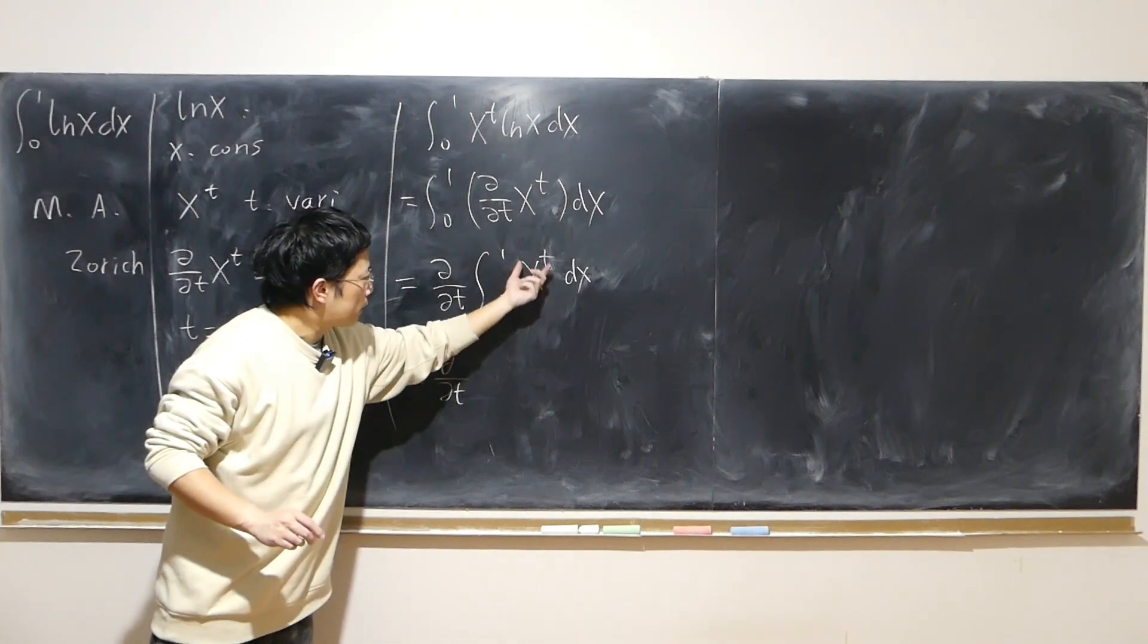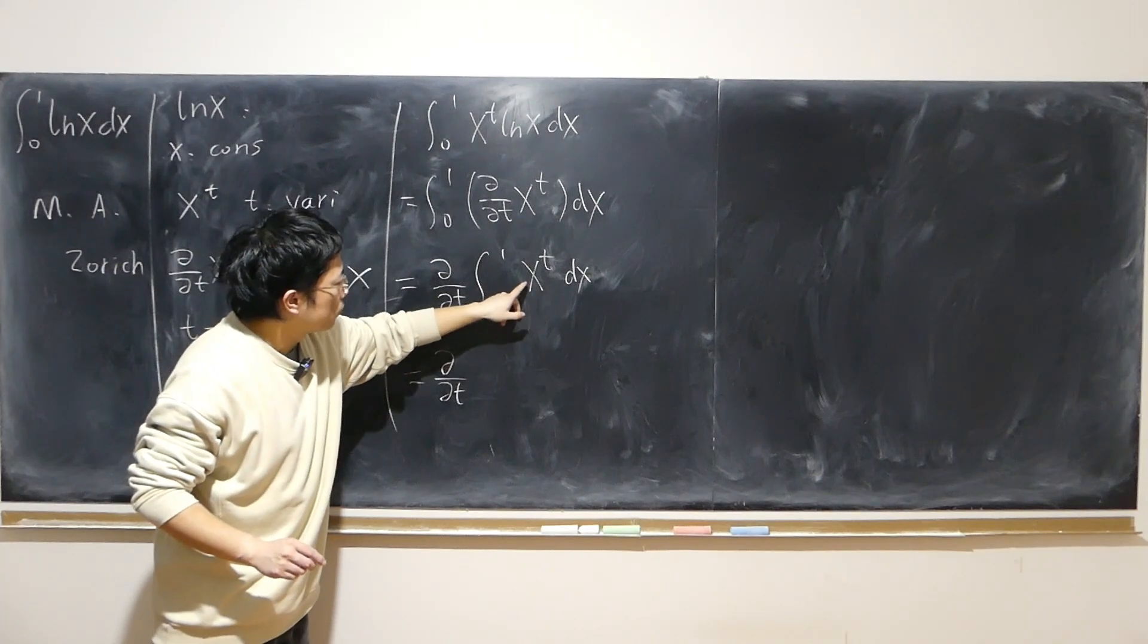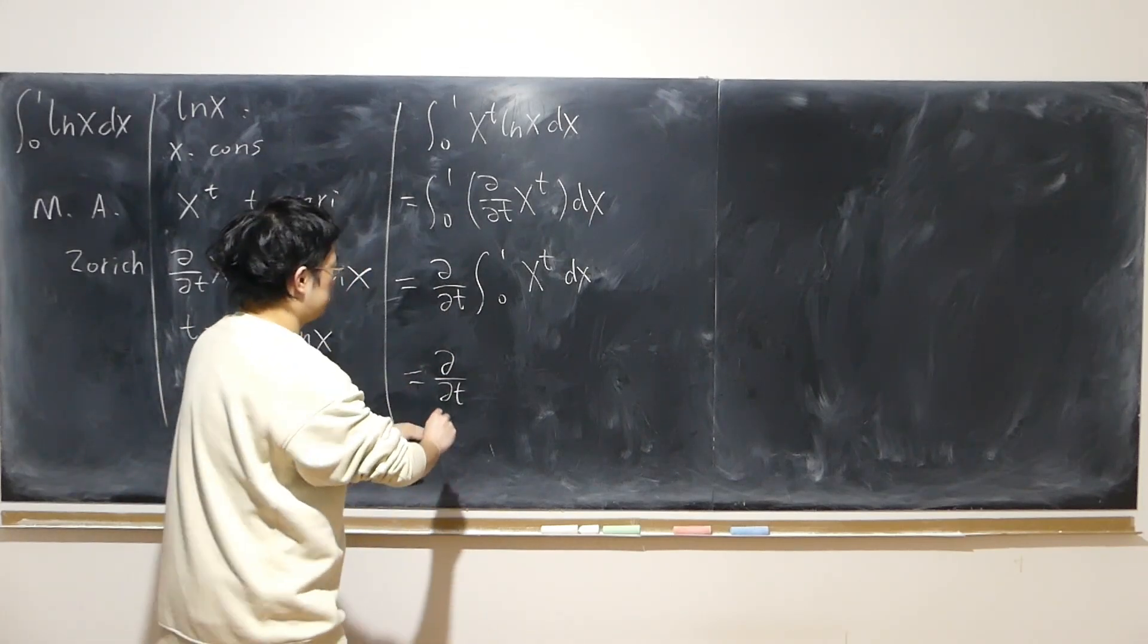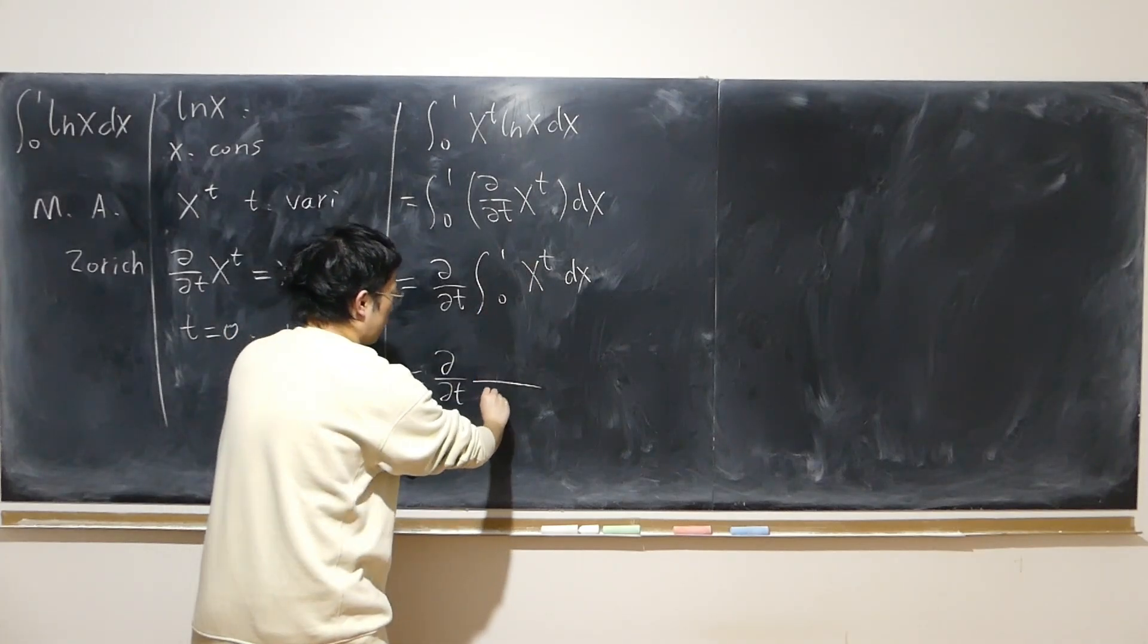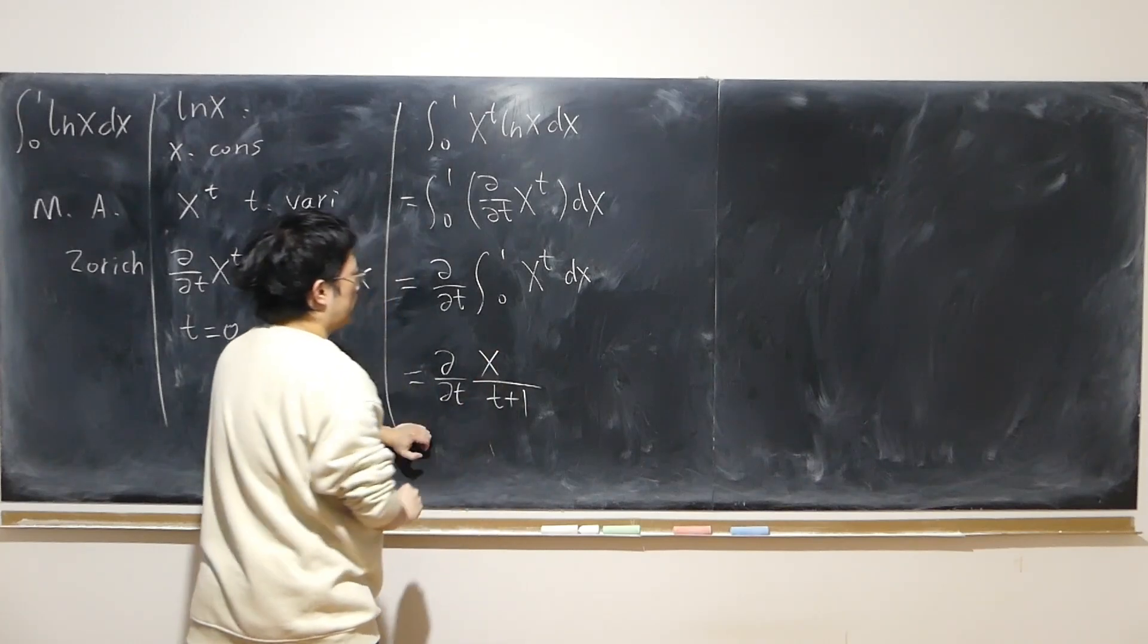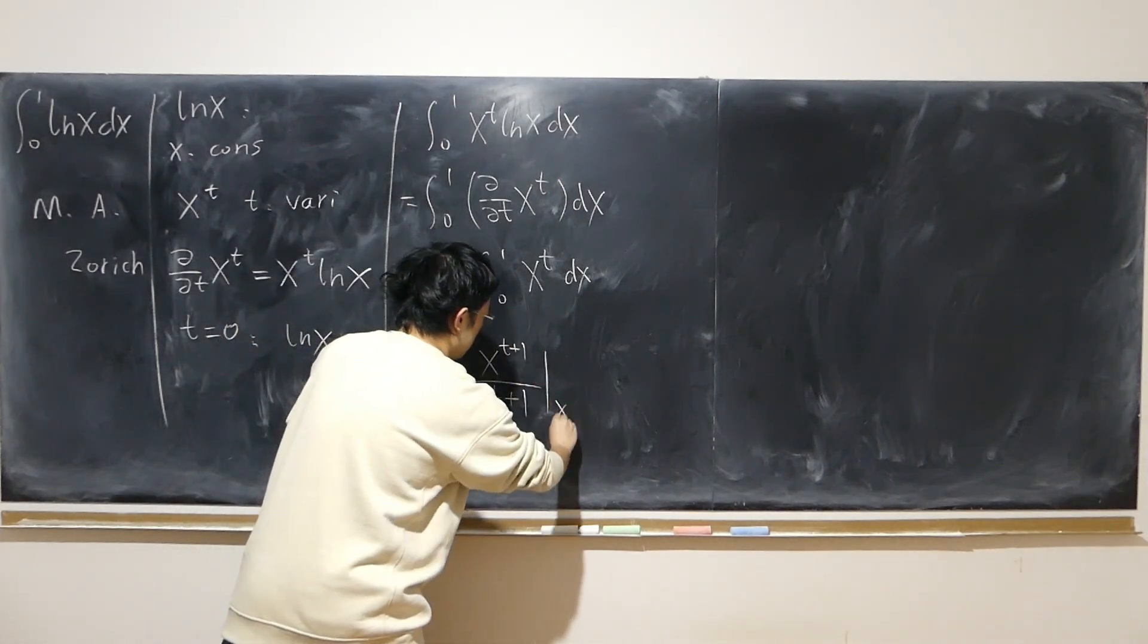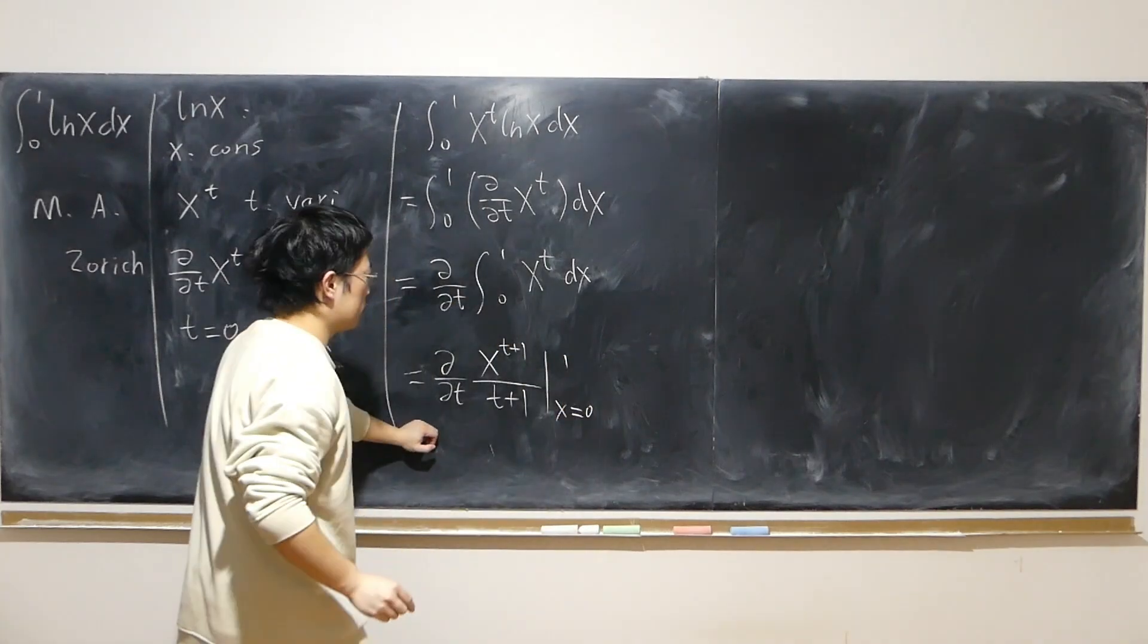So this x to t is a power function. Base is the variable. Power is the constant. And standard rule for that. Antiderivative is just power plus 1 at the bottom. x as the base, as the variable. Power plus 1. x from 0 to 1.